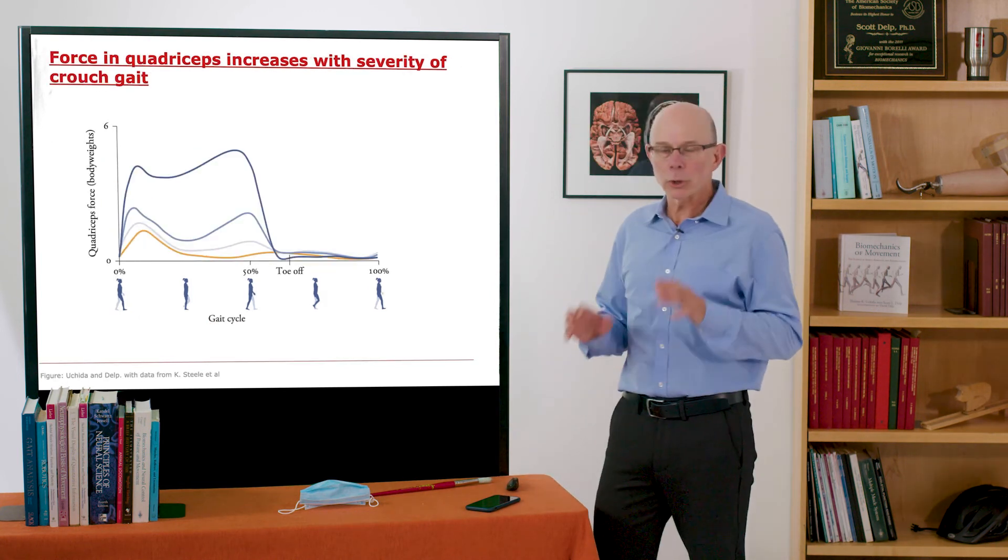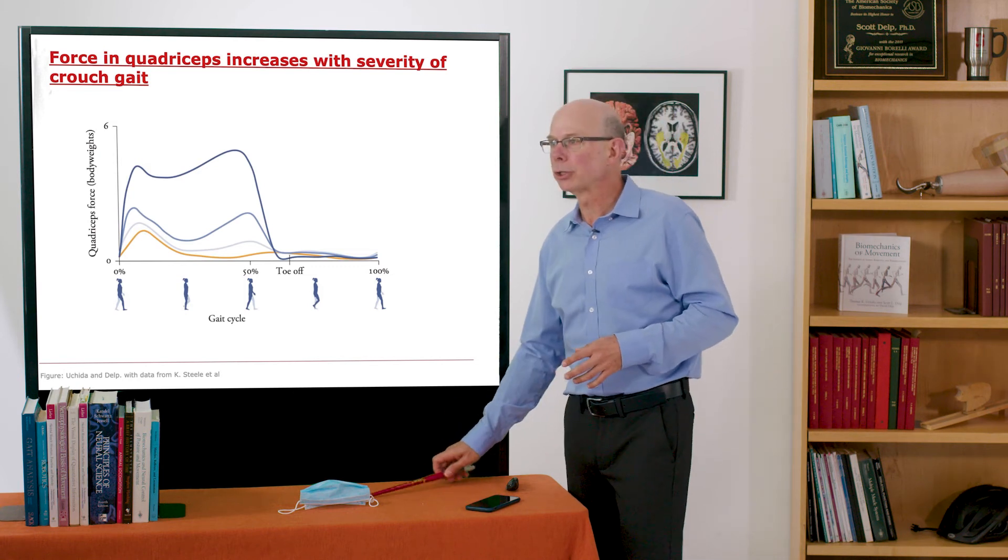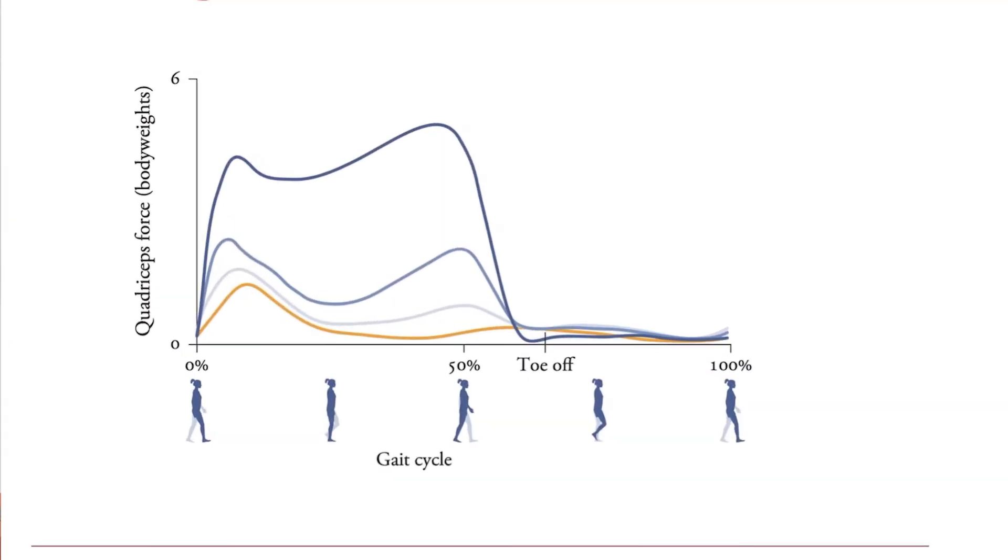So the quadriceps force increased dramatically with crouch. So again typical gait shown in orange down here. Moderate, I'm sorry mild and moderate and then severe crouch gait. You see the quadriceps force have to go way up. I'm plotting in terms of body weights here. The scale is six body weights. So you're generating in this case five times body weight.